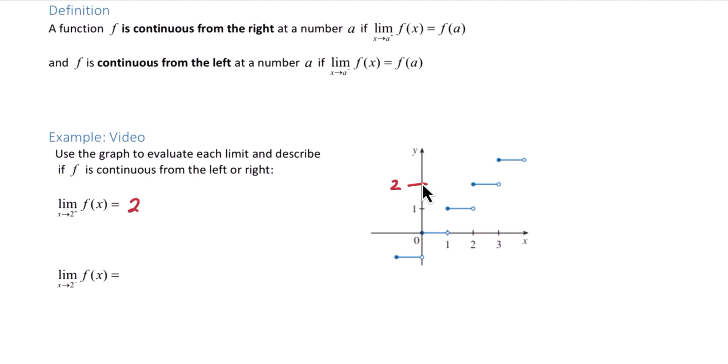Now we want to ask, is it continuous from the right? So does it fit this definition? Is the limit the same as f of a, or in our case, f of 2? f of 2 is defined to be 2, and our limit is 2, so we can say that this is continuous from the right.